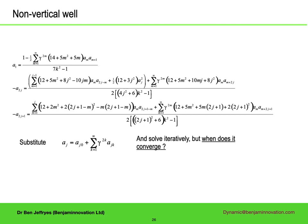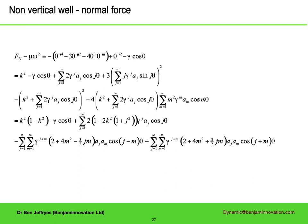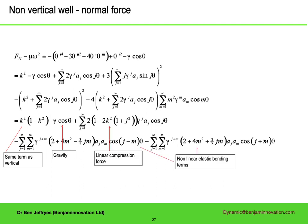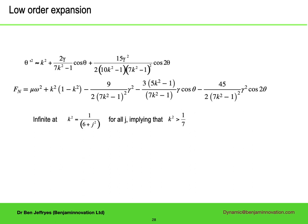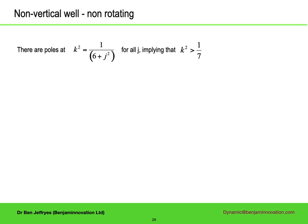I'll come back to that in a second, but first let's look at the normal side force. We can substitute the Fourier expansion into the normal side force equation too, and get another long expression. It's got the k squared term, as in the vertical case. Then there is a gravity term, helping at the bottom of the hole, opposing at the top, plus a linear compression force, and some non-linear elastic bending terms. It's worth just looking at the lowest order terms explicitly. They are infinite for k squared equals 1 over 6 plus j squared, for all j, implying that k squared must be over 1 seventh.